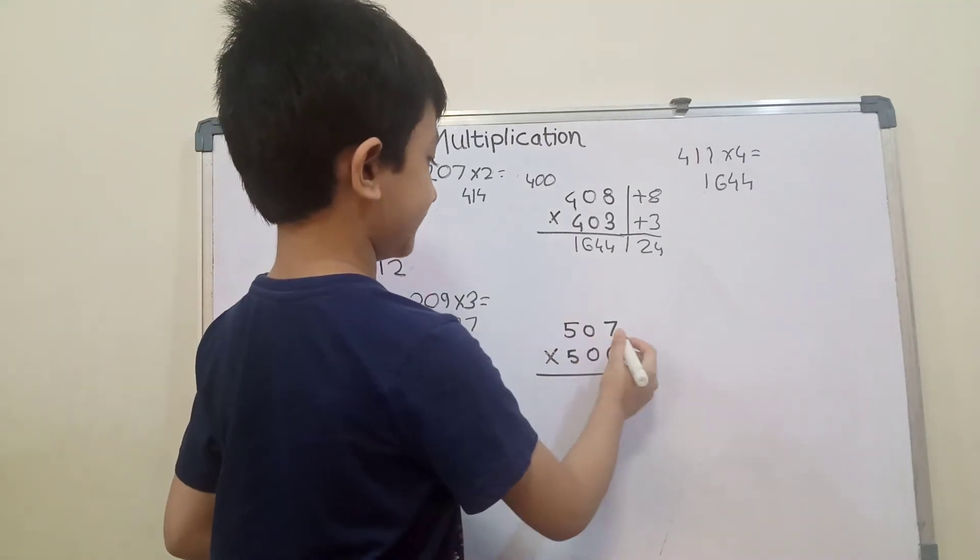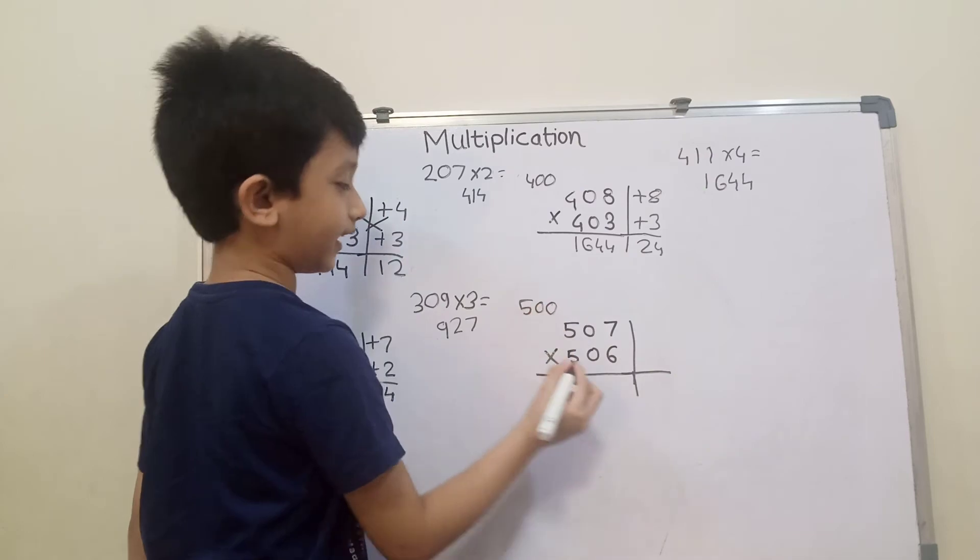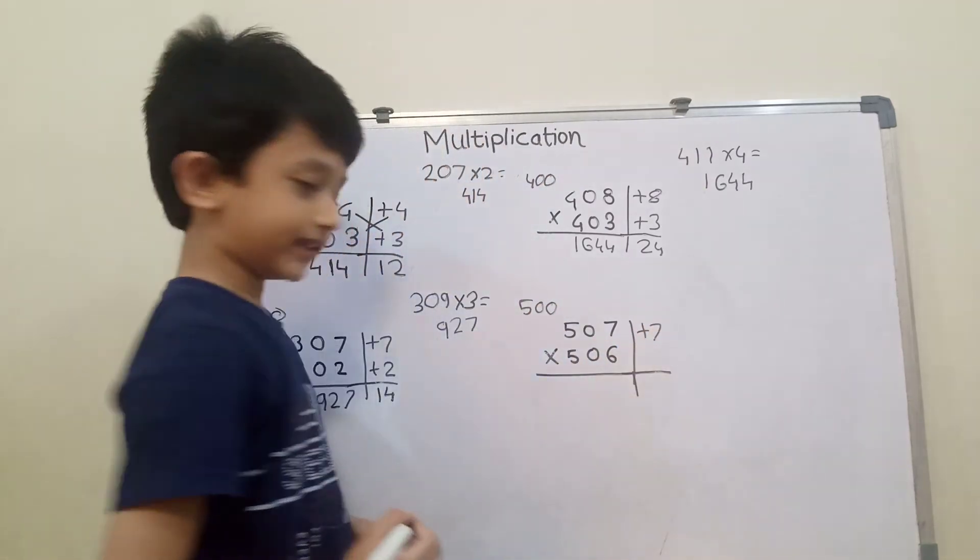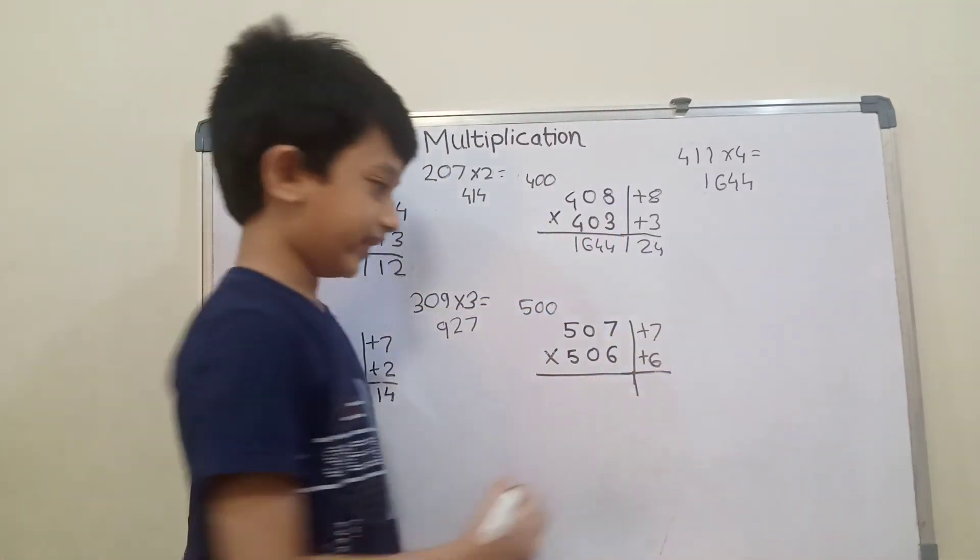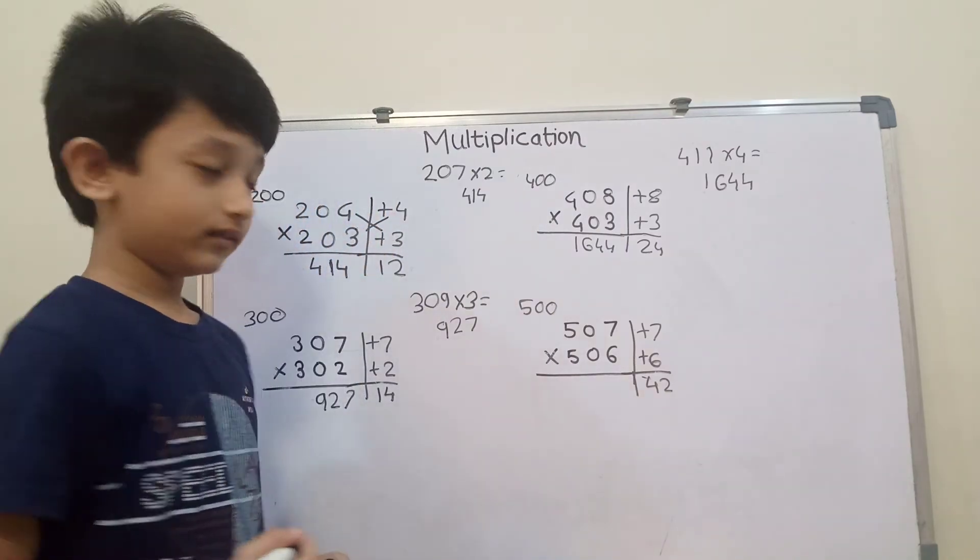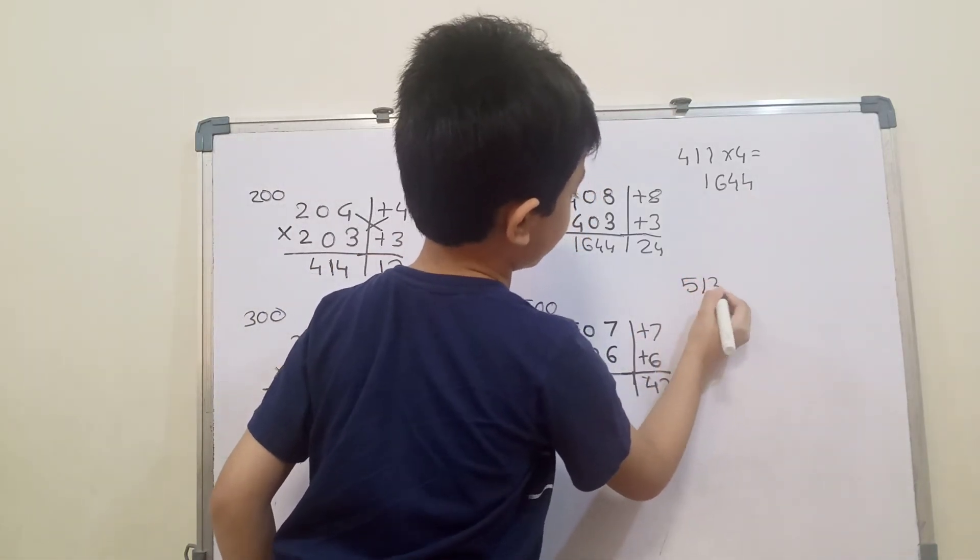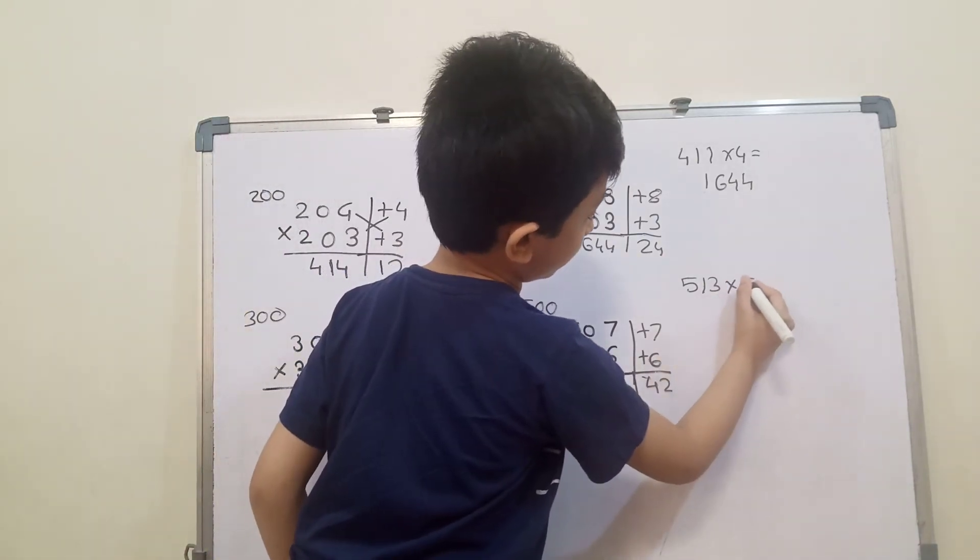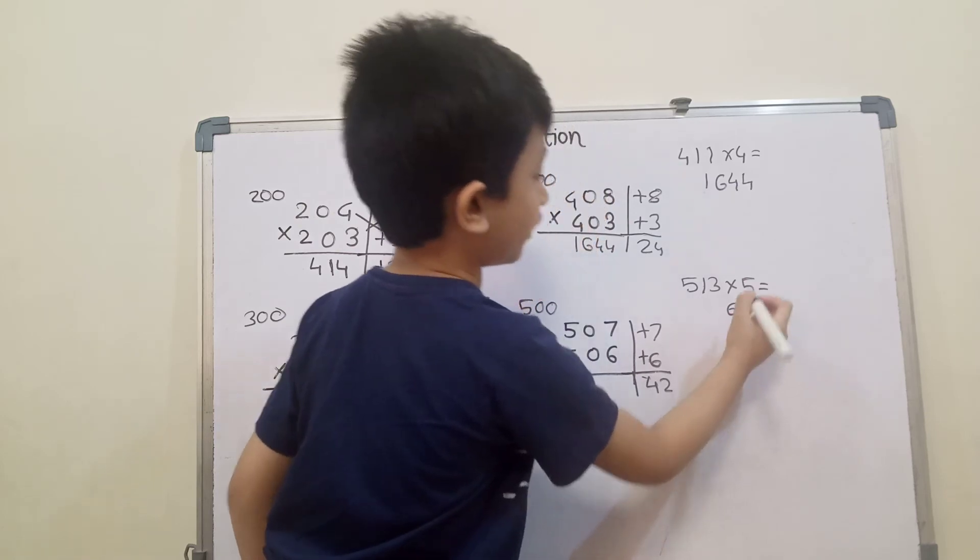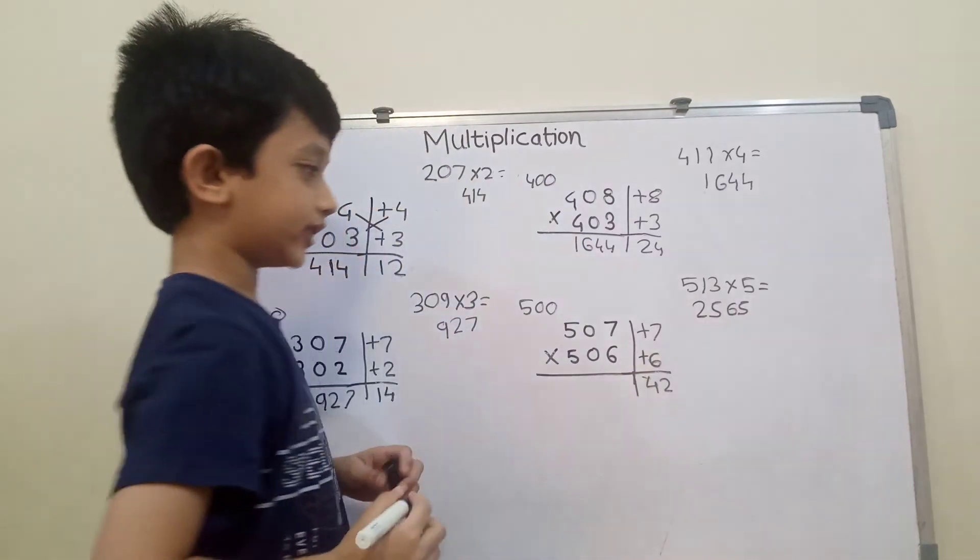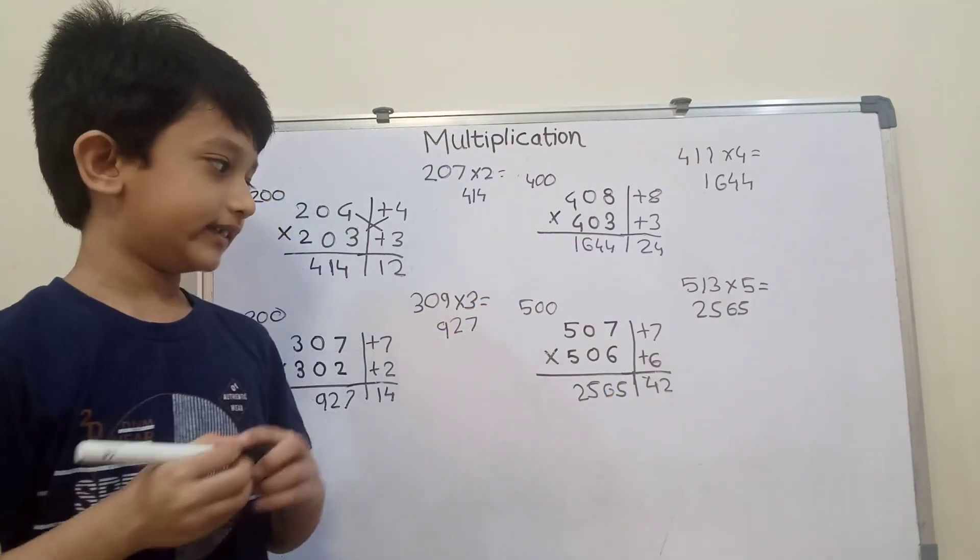Let's start with next problem: 507 into 506. The base is 500. 500 plus 7 here and plus 6 here. 6 times 7 is 42. Then 507 plus 6 equals 513. The base is 500, so 5 times 5 is 25. So the answer is 256,542.